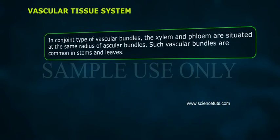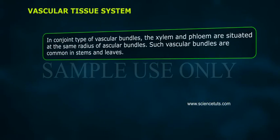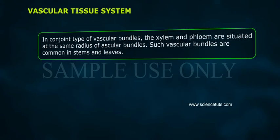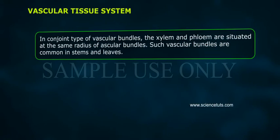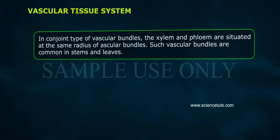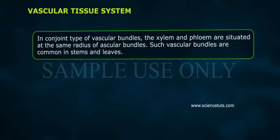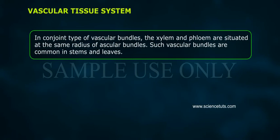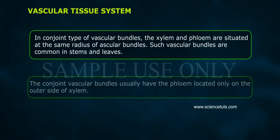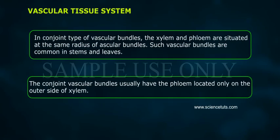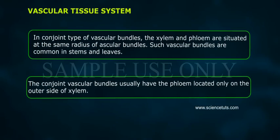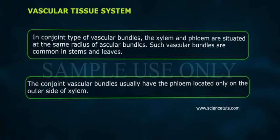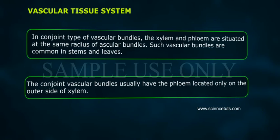In the conjoint type of vascular bundles, the xylem and phloem are situated at the same radius of the vascular bundle. Such vascular bundles are common in stems and leaves. The conjoint vascular bundles usually have the phloem located only on the outer side of the xylem.